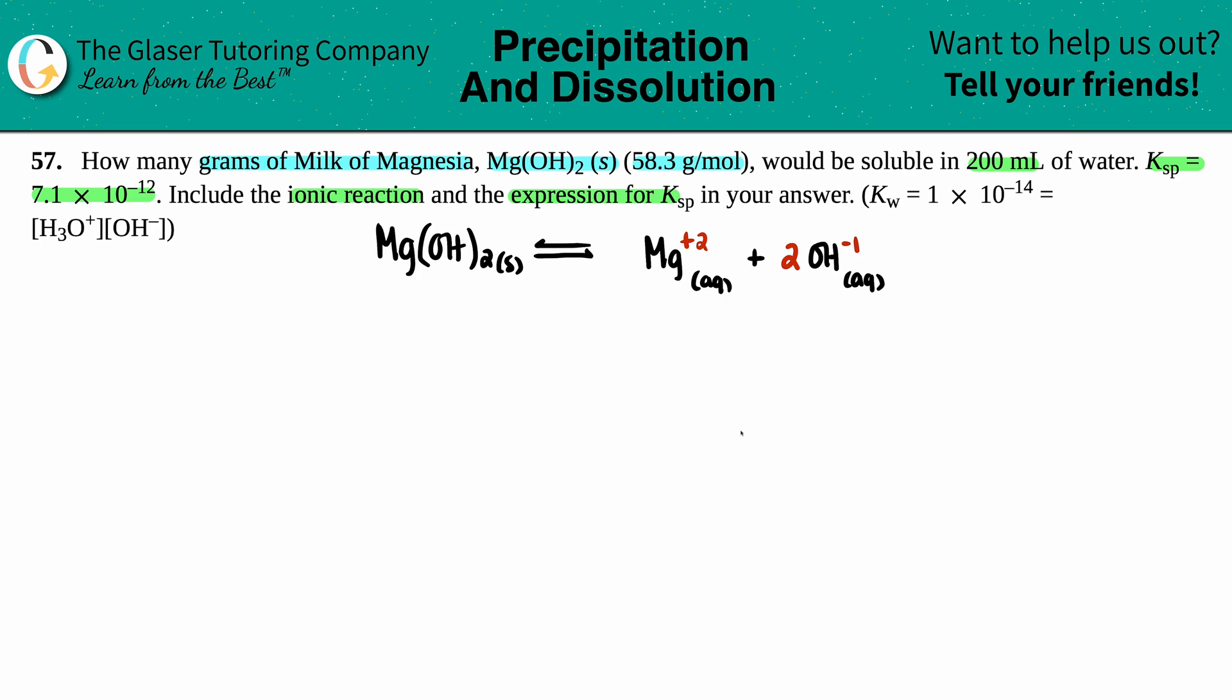We're going to be at a saturated solution and find our specific Ksp equation. The general one is equal to the concentration of the products raised to the coefficients. In our case, the Ksp equals Mg²⁺ times OH⁻, and we raise it to the coefficients. There was a two in front of the OH, so I have to raise that to the second. I did include the expression for Ksp.